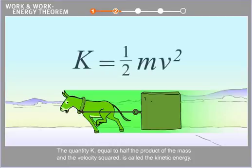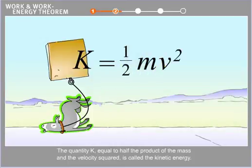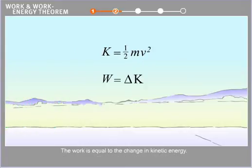The quantity K equal to half the product of the mass and the velocity squared is called the kinetic energy. The work is equal to the change in kinetic energy. This is the work energy theorem.